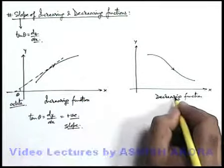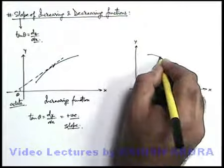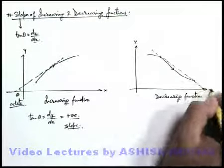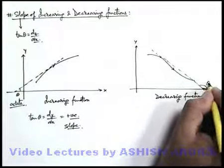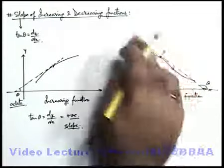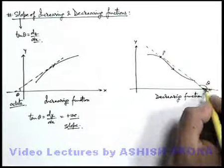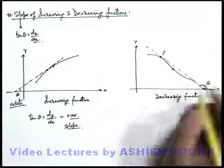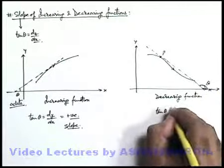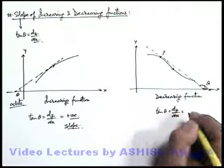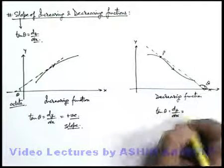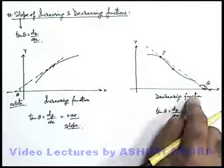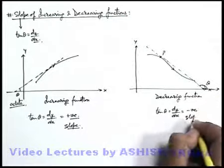Now similarly for a decreasing function if we talk about tangent. So at a point if we draw the tangent, you can see, it'll make an obtuse angle. Say at point p we're drawing the tangent of the graph. It makes an obtuse angle with the positive direction of x axis. If we find out the value of tan theta or dy by dx, obviously for obtuse angle if we take the tangent it'll be a negative quantity. So always remember that for a decreasing function the slope is always negative.